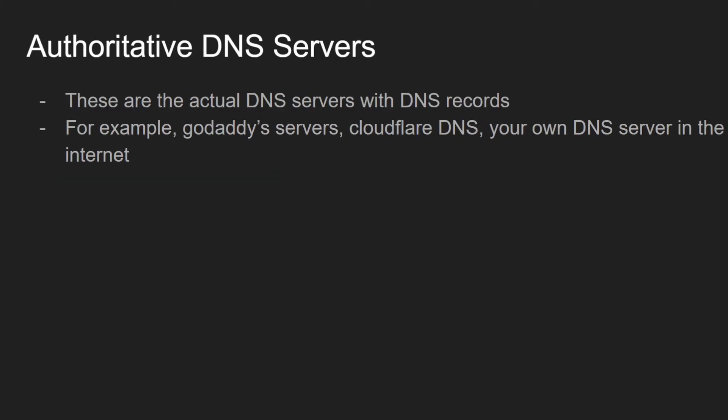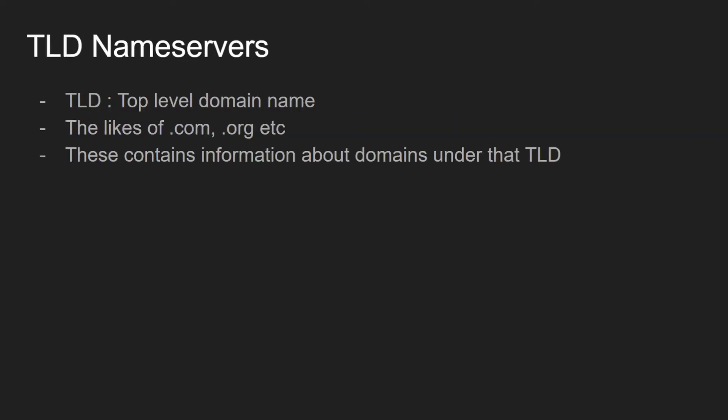Next are the authoritative DNS servers — these are the DNS servers with the actual records of your domain. For example, if you have your domain bought from GoDaddy, you will probably be using GoDaddy's name servers. Or if you have your DNS managed by Route 53, then those Route 53 servers are called the authoritative DNS servers. They are called authoritative because they are the only servers with the actual DNS records for your domain.